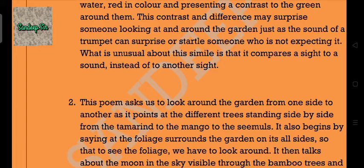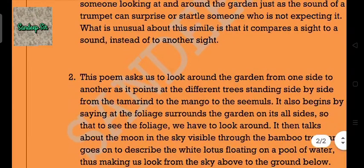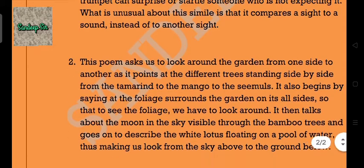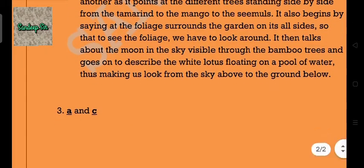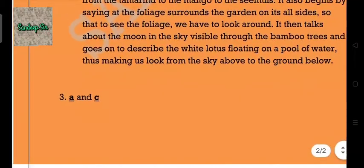Answer 2: This poem asks us to look around the garden from one side to another as it points at different trees standing side by side — from the tamarind to the mango to the simuls. It also begins by saying that the foliage surrounds the garden on all its sides, so that to see the foliage we have to look around. It then talks about the moon in the sky visible through the bamboo trees, and goes on to describe the white lotus floating on a pool of water, making us look from the sky above to the ground below.